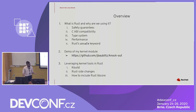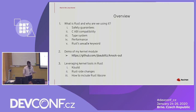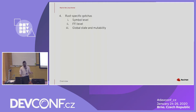We're going to first talk about what is Rust and why are we using it. Then we're going to do a demo of my kernel module, talk about leveraging existing kernel tools for building Rust, and last we'll talk about the most interesting part: some Rust-specific gotchas — things you might not expect to bump into at a lower level and how we can get around that.